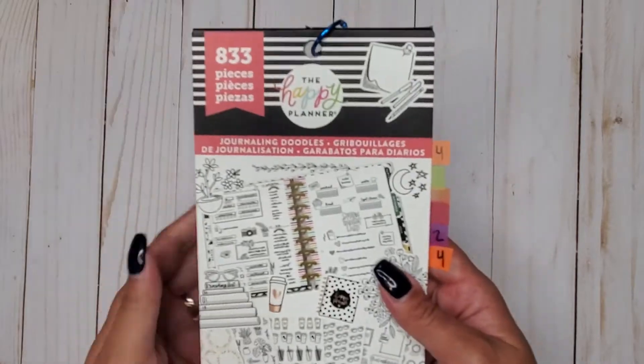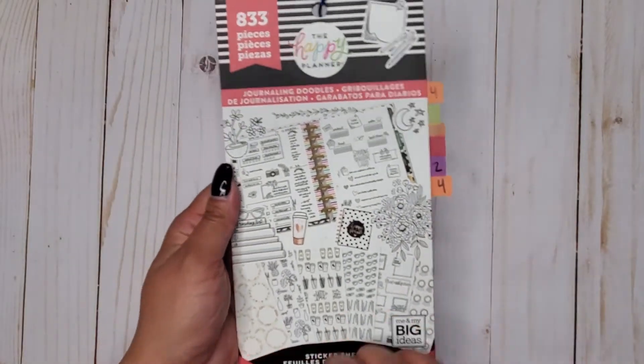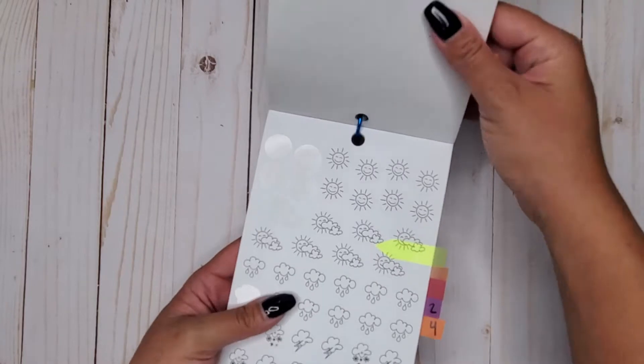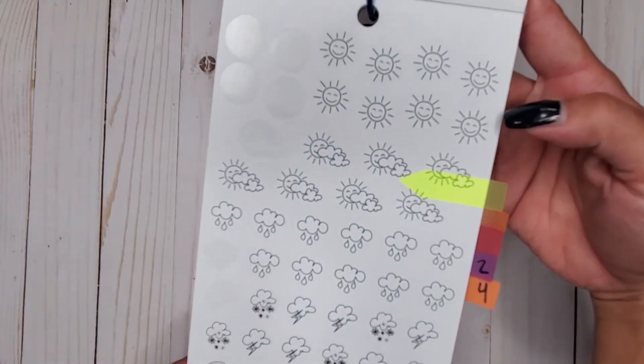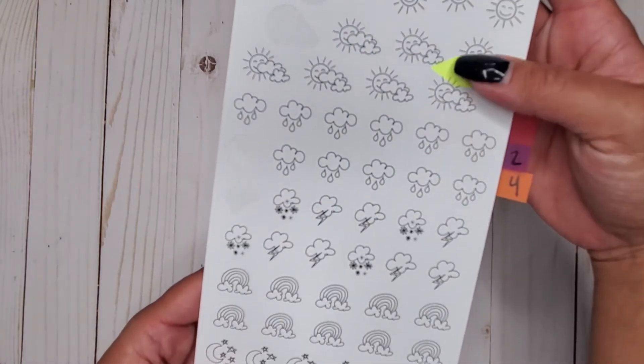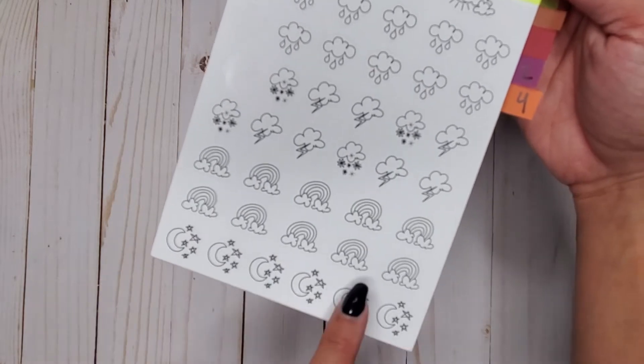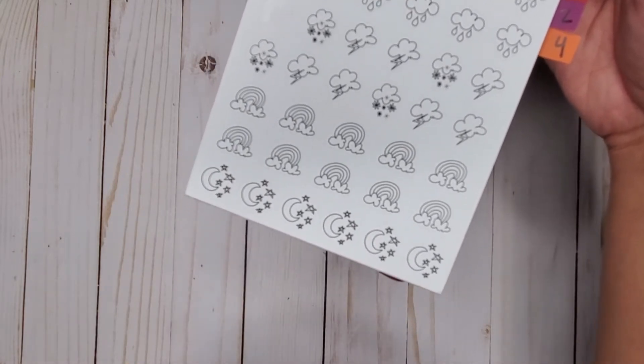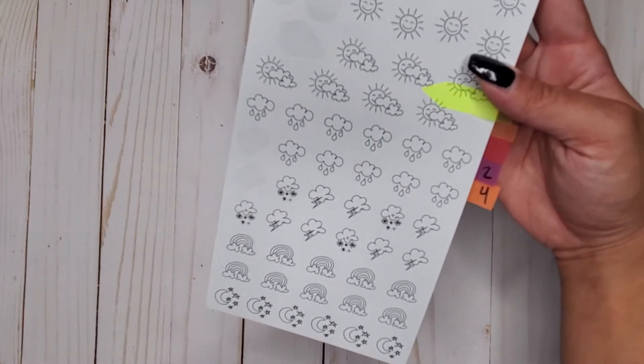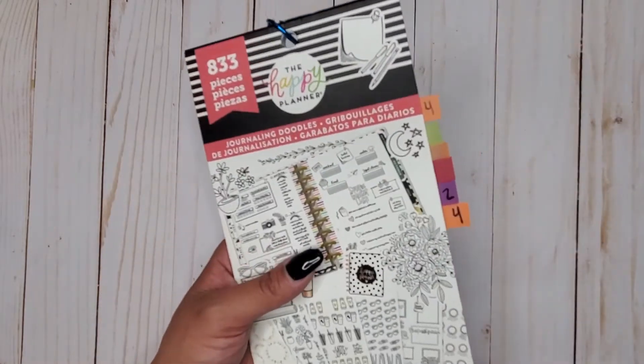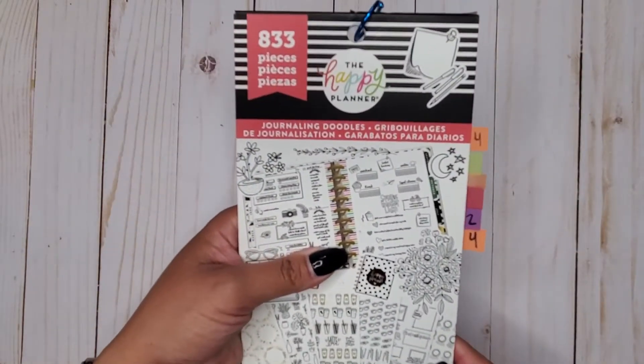Then I have journaling doodles 833. In here again we have our sun and these are on paper stickers. These ones have little rainbows that you could color in if you want to, super cute. So that is in journaling doodles 833.